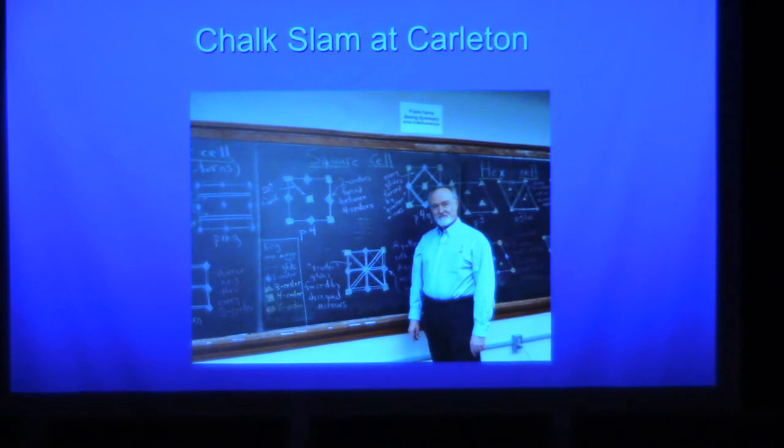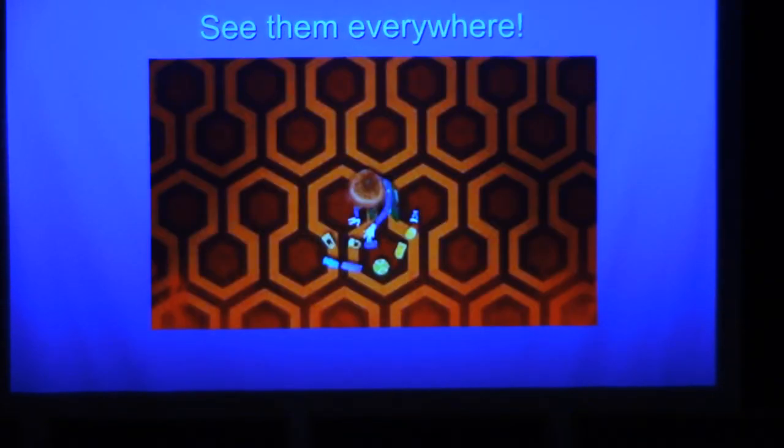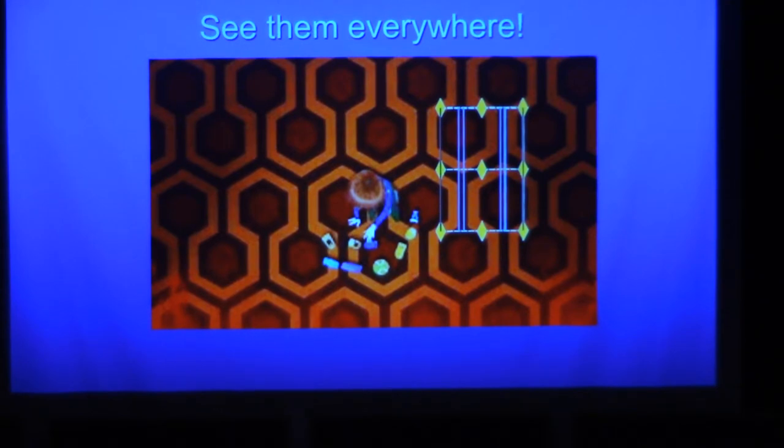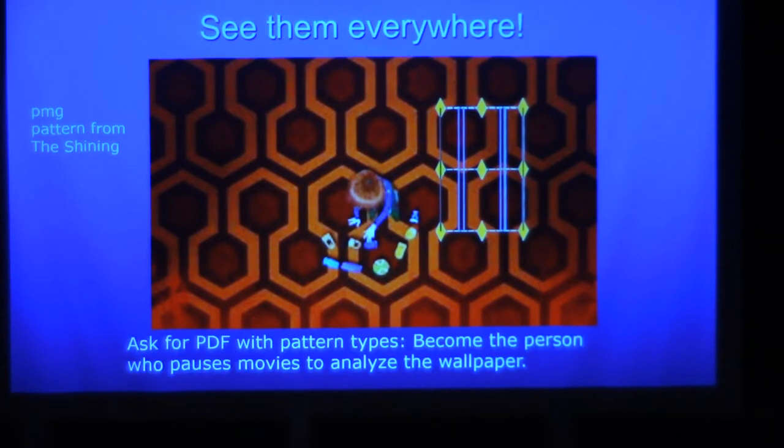So the wallpaper surprise: I bet you know, for whom is it a surprise in this room? I hope someone. There's only 17 of these types, only 17 isomorphism classes of wallpaper groups. This is the diagram from my book of the wallpaper cells, and there's p31m. I love this fact so much I participated in a chalk slam at Carleton College where they had wonderful chalkboards, and we're celebrating them, believe it or not. So I drew all of the fundamental cells for the 17 groups. Once you see these, you start to see them everywhere. So what movie is this from? You draw the fundamental cell and see the twofold rotational symmetry. That's diamonds. The parallel lines are mirrors, the glide is that dotted line. What movie is it? The Shining. This is a pmg pattern from The Shining. So I really want more than one person in this room to become the person who pauses the movie to look at the wallpaper.